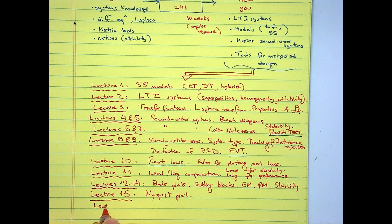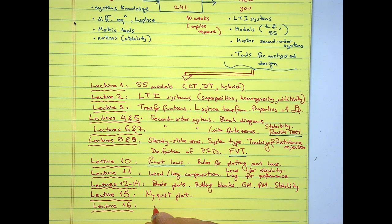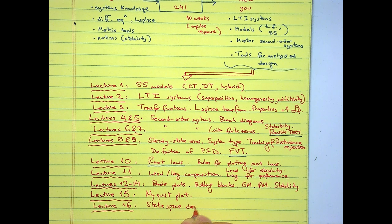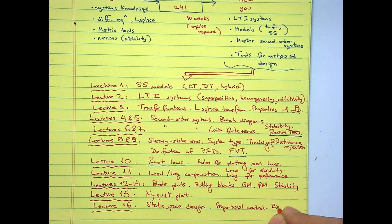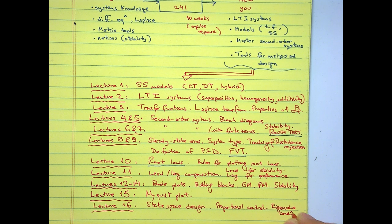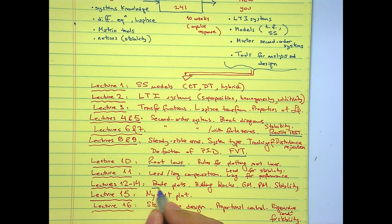In lecture 16 we came back to state space design. We designed a proportional controller, and we have the eigenvalue condition for stability. This is another tool — state space design is another tool alongside the frequency-domain approaches.